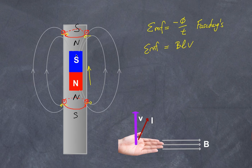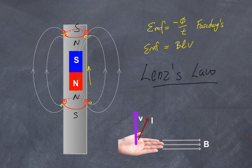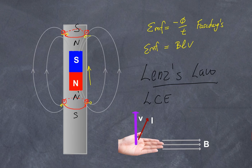Both above and below, eddy currents produce a polarity that opposes the motion of the magnet that caused them. I have just described Lenz's Law: any induced current produces a magnetic field that opposes the one that generated it. This is consistent with the law of conservation of energy — you cannot gain energy from this process.